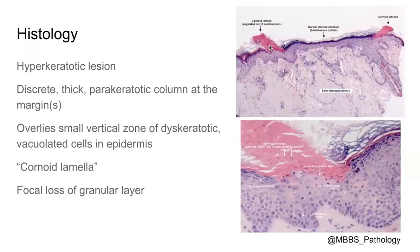What do we see with porokeratosis under histology? Reflecting the clinical features of these lesions, you also see the cornoid lamella on histology. This manifests as a thick pink column as you can see here on the images on the right — thick parakeratotic columns. This overlies a zone where there is a focal loss of the granular layer, and in this zone there is also a vertical zone of dyskeratotic vacuolated cells in the epidermis.